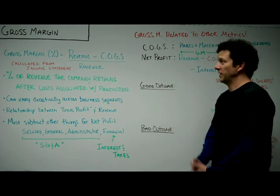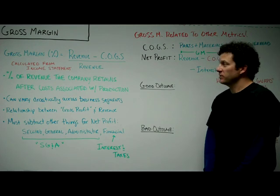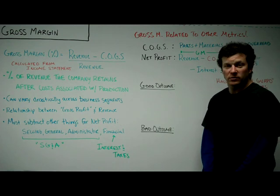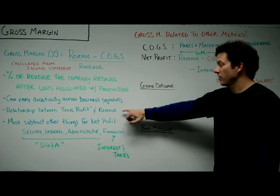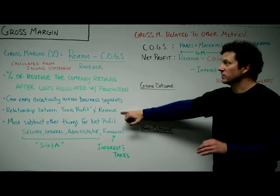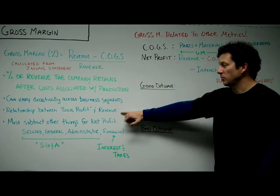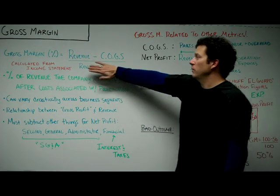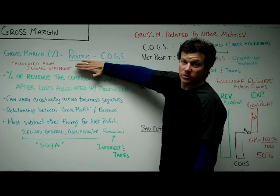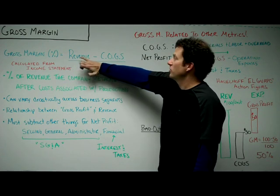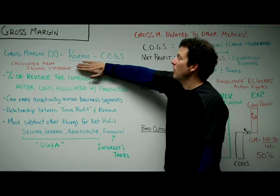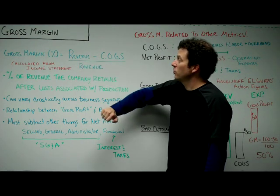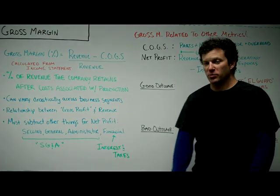So gross margin — it's usually expressed as a percentage. The way it's calculated is very simple: it's revenue minus cost of goods sold divided by revenue. Gross profit, on the other hand, is not a percentage — gross margin is a percentage. It's the relationship between gross profit and revenue. Gross profit would simply be revenue minus cost of goods sold. So if you had $100 in revenue and it costs you $60 to create your products, your gross profit would be $40.